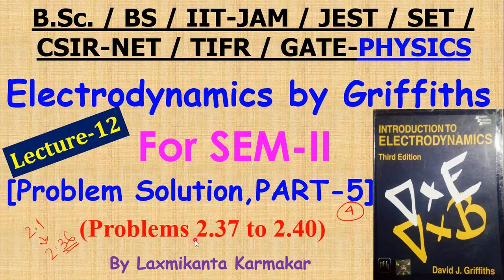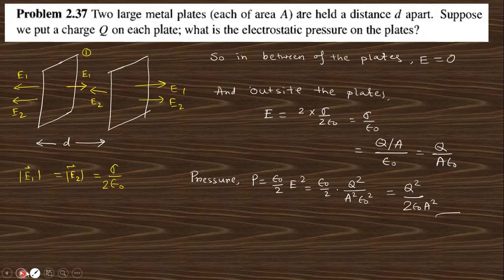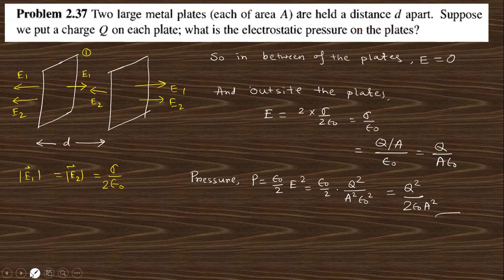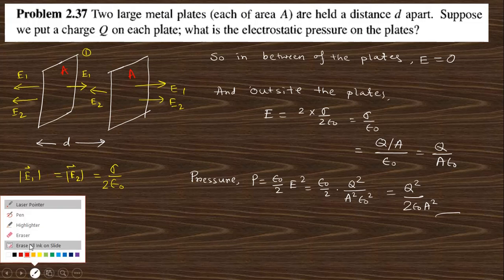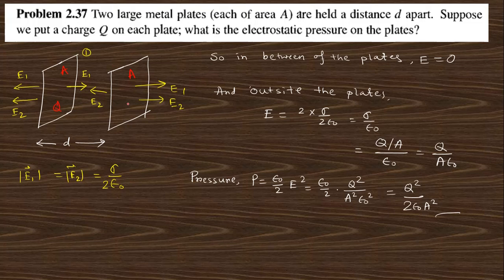In this video I want to discuss problems 2.37 to 2.40. Let's start with question 2.37, which says: two large metal plates, each of area A, held at a distance d apart. Suppose we put a charge Q on each plate.